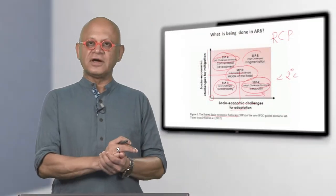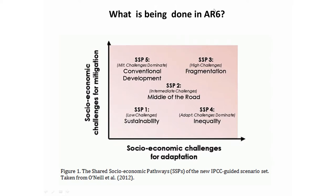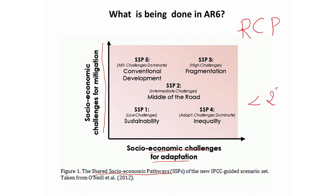In the next phase of IPCC assessment, the AR6 — Assessment Report 6 — will be released starting in 2020 into 2021. On top of the RCPs created for AR5, there are now so-called Shared Socioeconomic Pathways — SSPs — that will be matched with the RCPs. They will address socioeconomic challenges for both mitigation and adaptation, as constraining CO2 emissions and warming to less than 2 degrees centigrade becomes more and more critical.